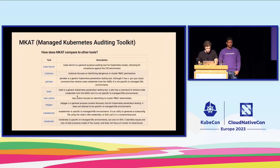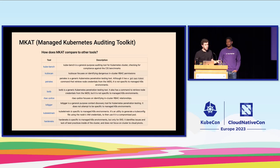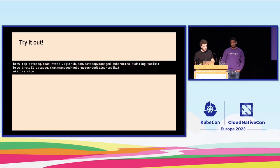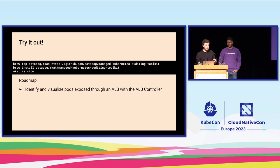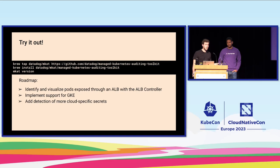The readme includes a comparison to other tools so the community can understand how MCAT compares. It's a single binary installable with Homebrew, with pre-compiled binaries for Linux, Mac, and Windows. The roadmap includes: visualizing pods externally exposed through a load balancer, adding GKE support, and detecting more cloud-specific secrets — for example, flagging a GCP service account key found in an AWS cluster.